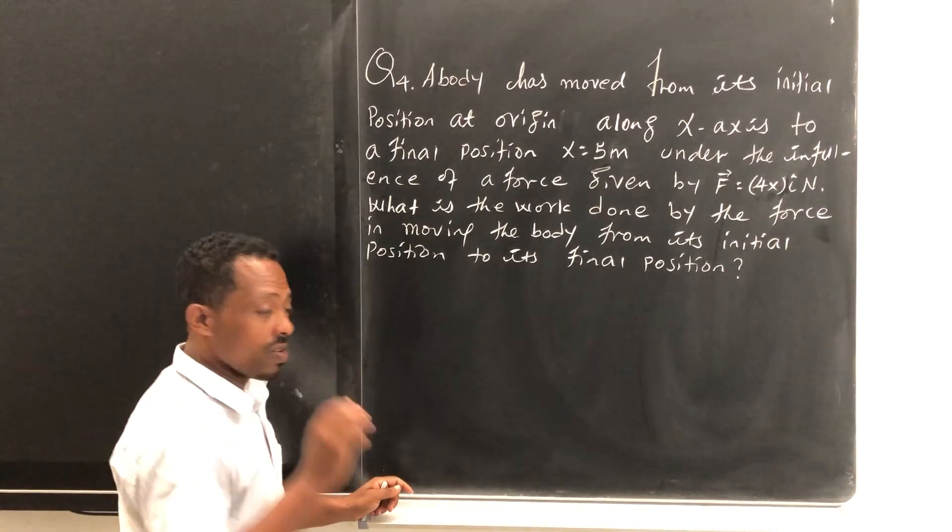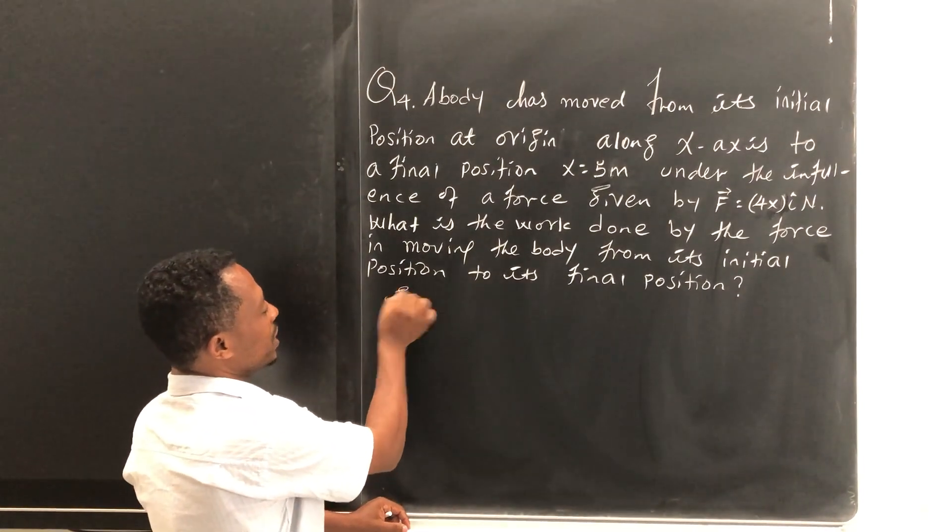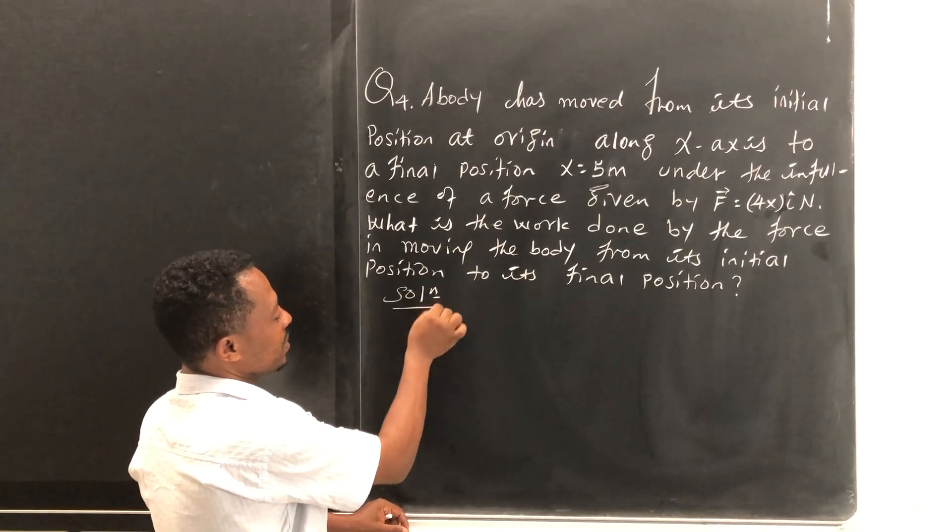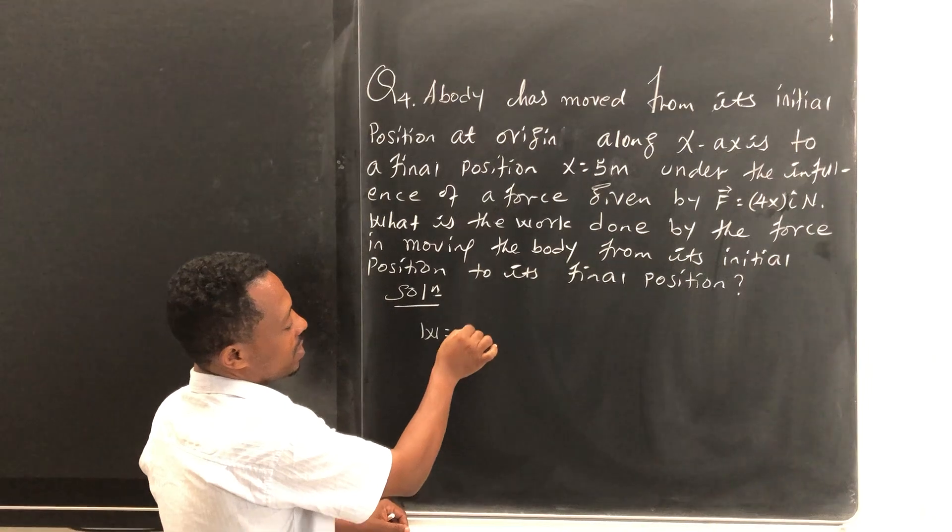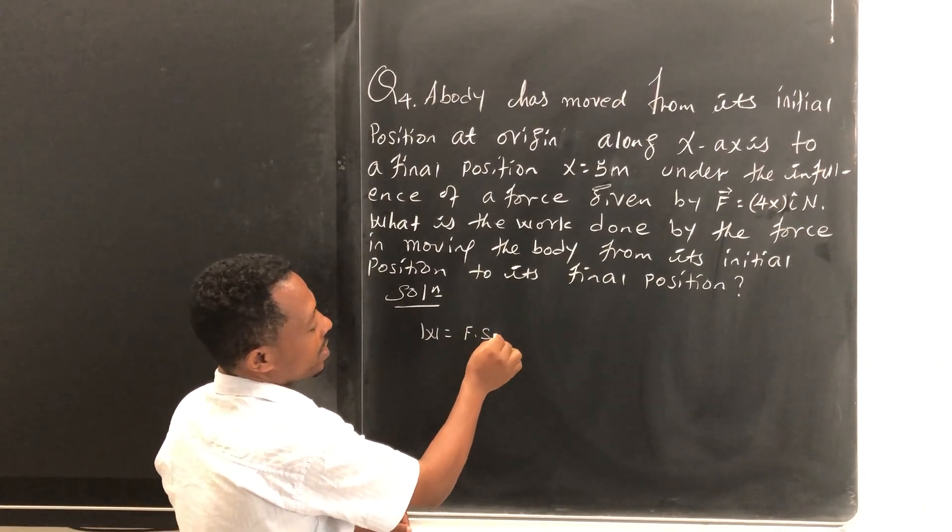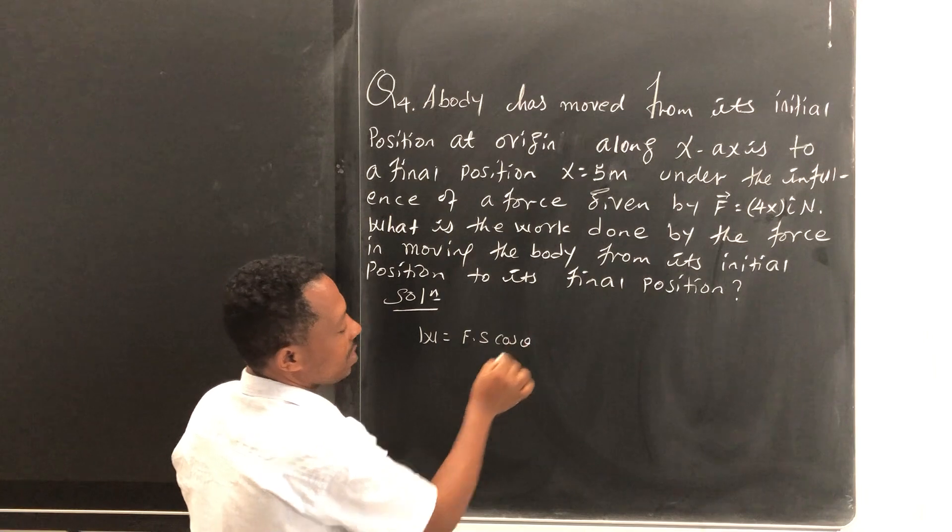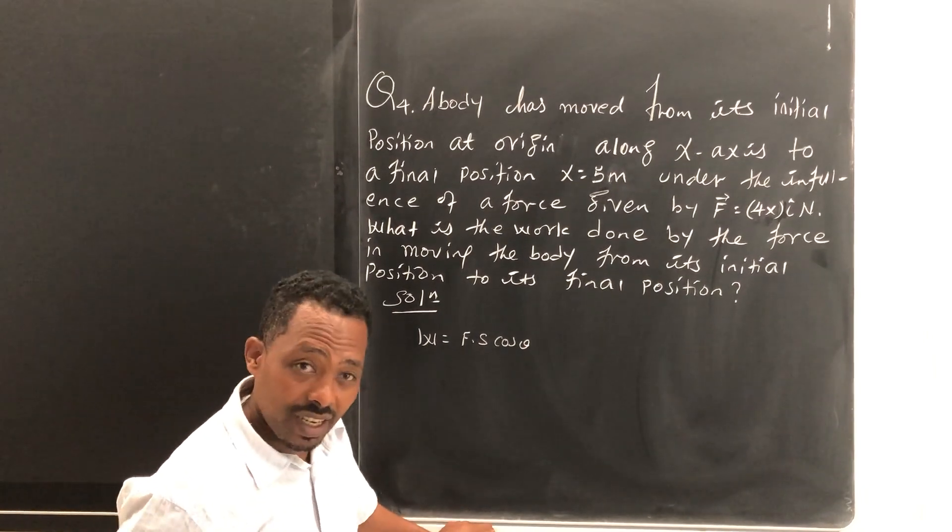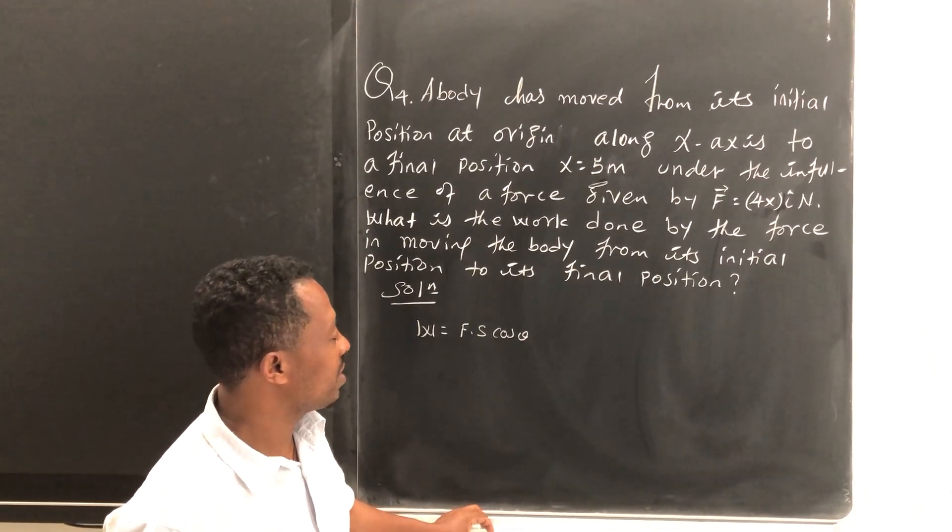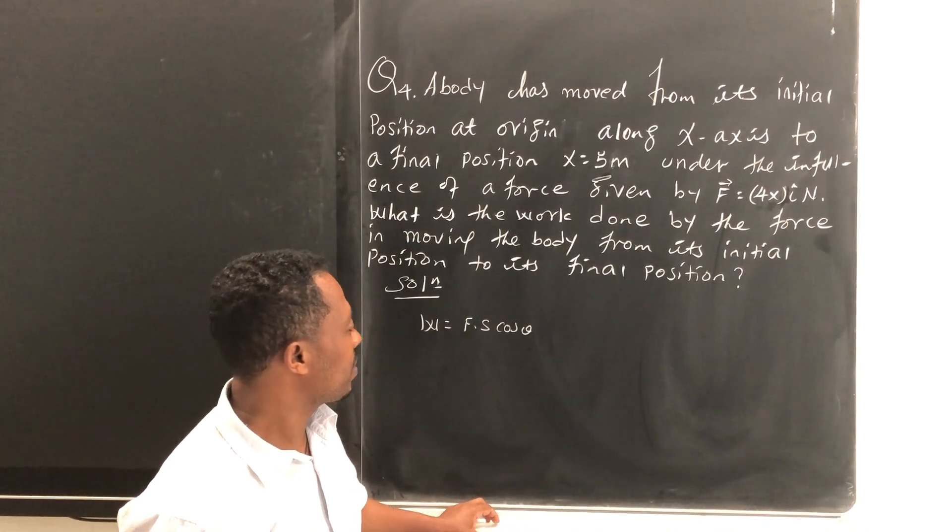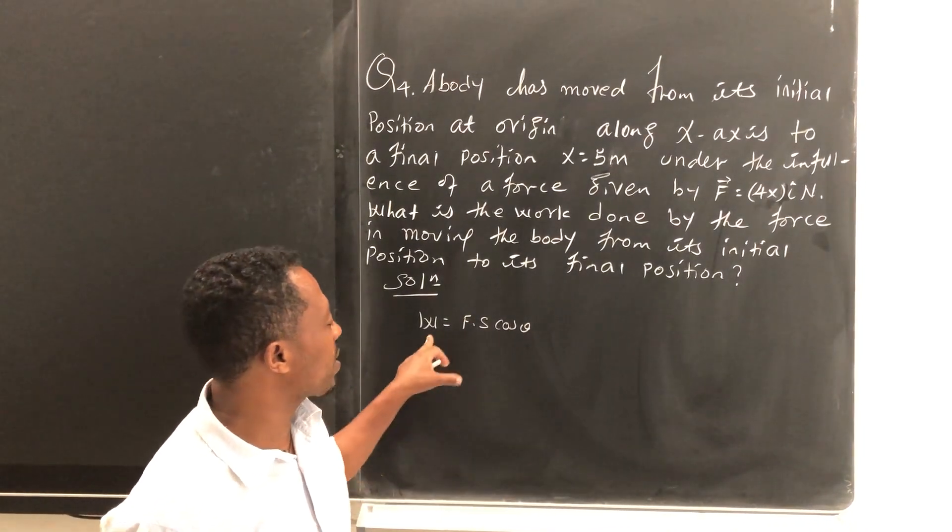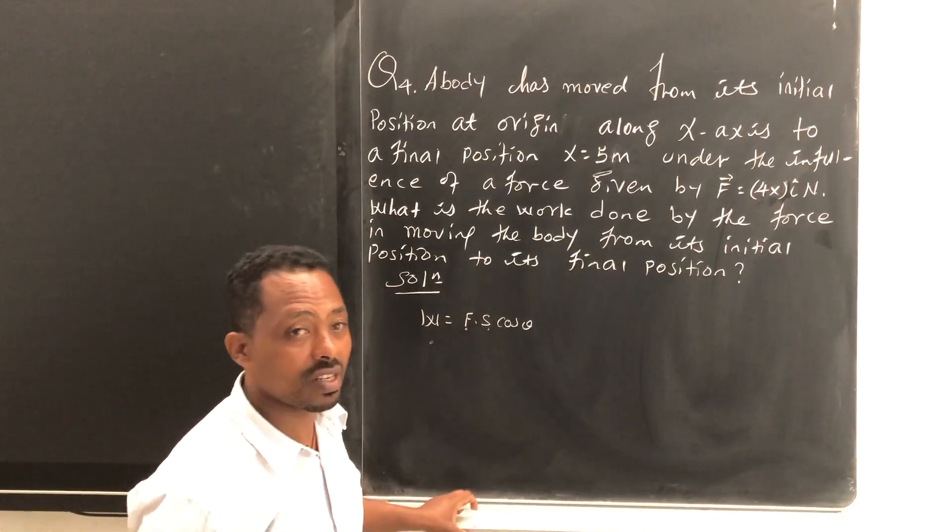Very good. Now, solution, my dears. As we know, work is equal to F dot S, and then cos theta. As we discussed in our earlier discussion, we said that to have work done, the force and displacement should be parallel with each other, and the angle between them should be zero.